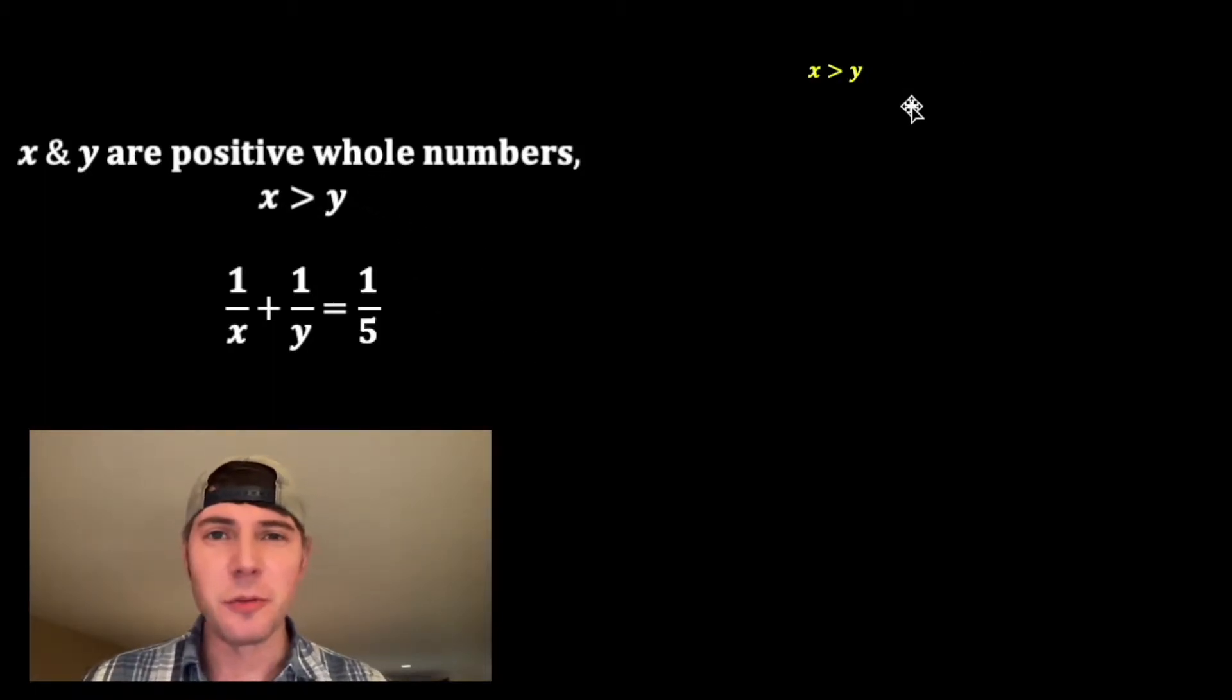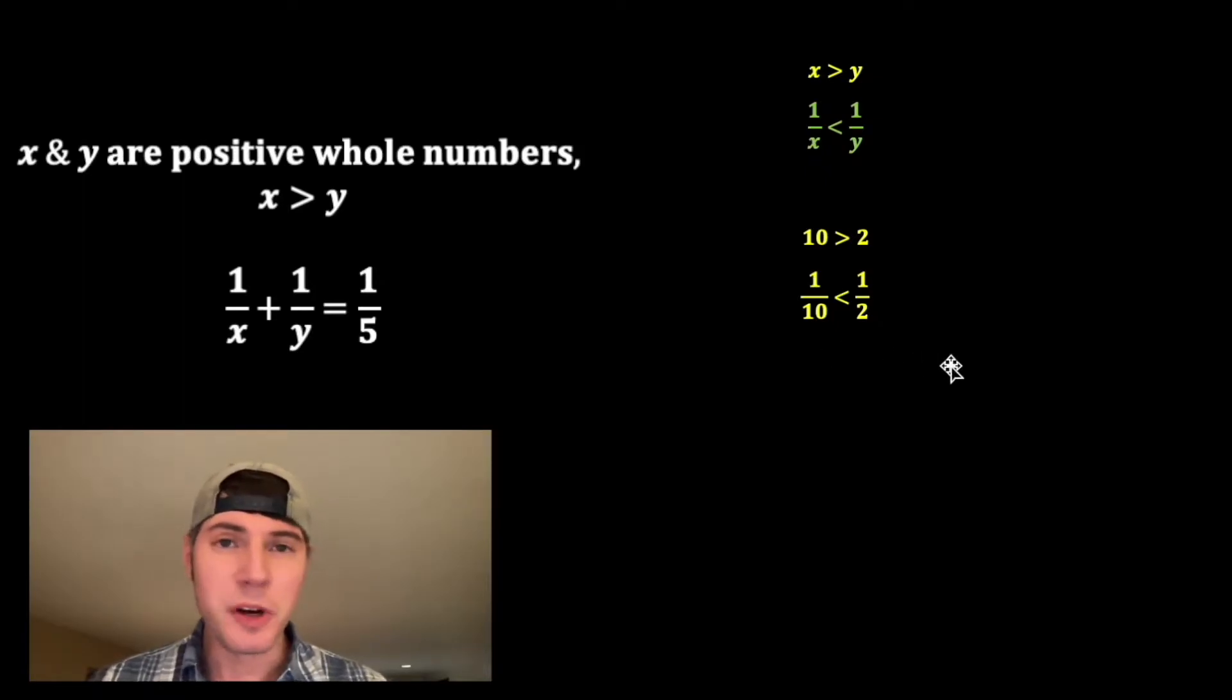First, let's bring down this x is greater than y. If I look at the reciprocal of each, I do 1 over x and 1 over y, this sign is gonna change directions. And for an example of this, we know that 10 is greater than 2. If we take the reciprocals and do 1 tenth and 1 half, we know that 1 half is greater than 1 tenth. So when you take a reciprocal like this, the sign changes directions. So same thing here. When we took the reciprocal, we changed the direction of the sign.